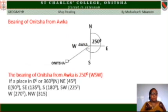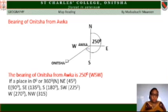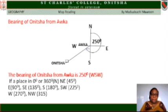Let us find the bearing of Onitsha from Oka. Place your cardinal points at Oka, which is the observer's position. Use a straight line to join Oka to Onitsha. From the true north, use your protractor to calculate the angle between the true north and the line that joins to Onitsha. The angle is 250 degrees, so the bearing of Onitsha from Oka is 250 degrees. In terms of direction, it is West of South-West.